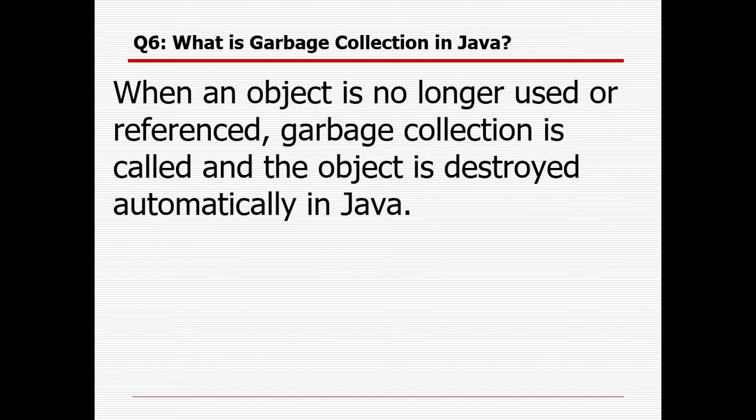What is garbage collection in Java? When an object is no longer used or referenced, garbage collection is called and the object is destroyed automatically in Java. The importance of garbage collection is that when objects or classes are no longer used, they occupy memory space. Using garbage collection, we can destroy all these things automatically, so the available memory space is increased.